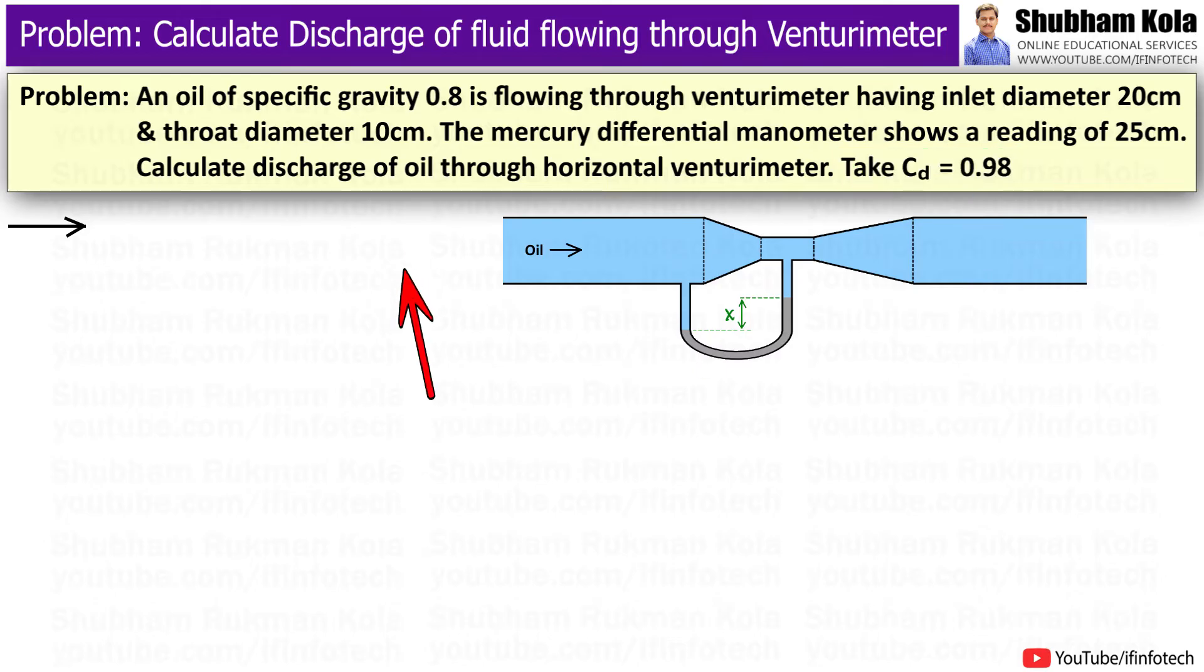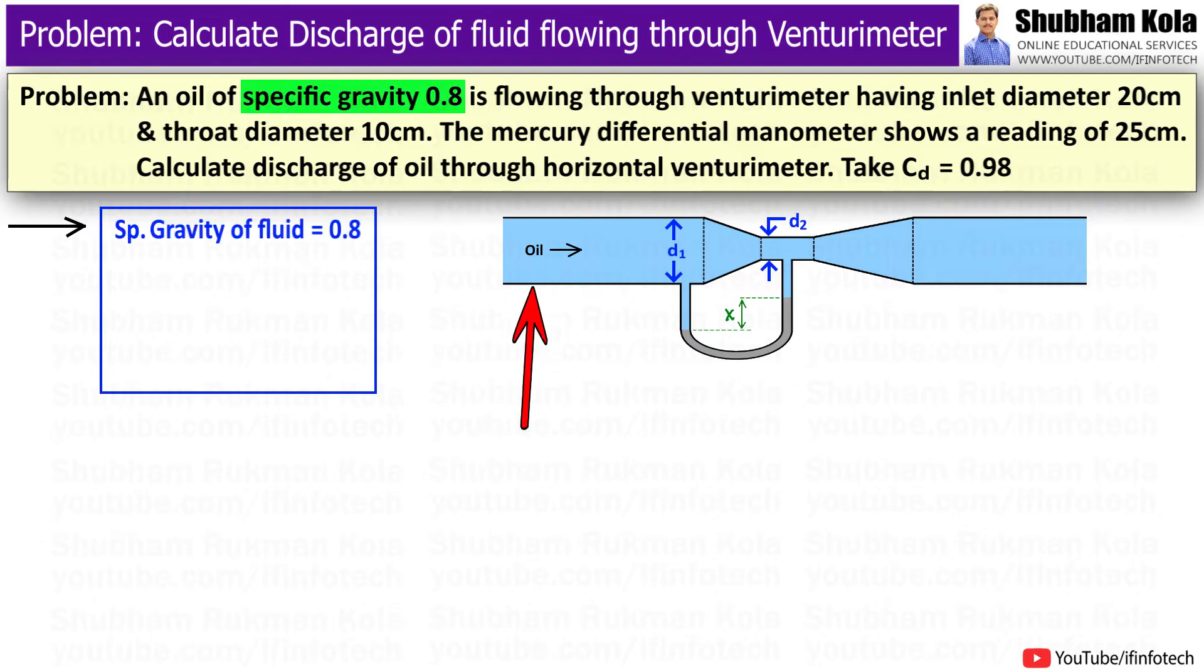To solve this problem, first I will write down the given data, where specific gravity of oil is 0.8, inlet diameter d1 is 20 cm or 0.2 m, and throat diameter d2 is 10 cm or 0.1 m.